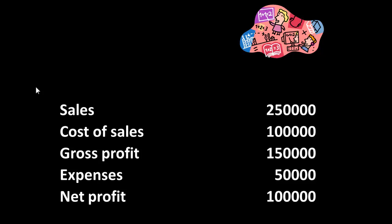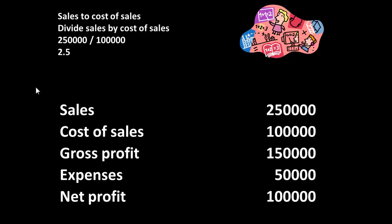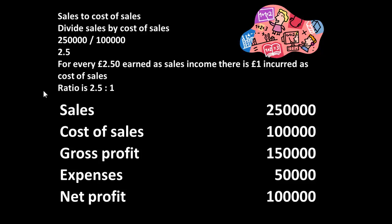So here's a bit of subtraction: 250,000 minus 100,000 gives 150,000. And a bit more: gross profit less expenses is net profit, so 150,000 less 50,000 equals 100,000. So, sales to cost of sales — we divide the sales by the cost of sales: 250,000 divided by 100,000 gives us 2.5. What it means is that for every £2.50 earned as sales income, there was £1 incurred as cost of sales. So our ratio is 2.5 to 1, written with the colon sign between.